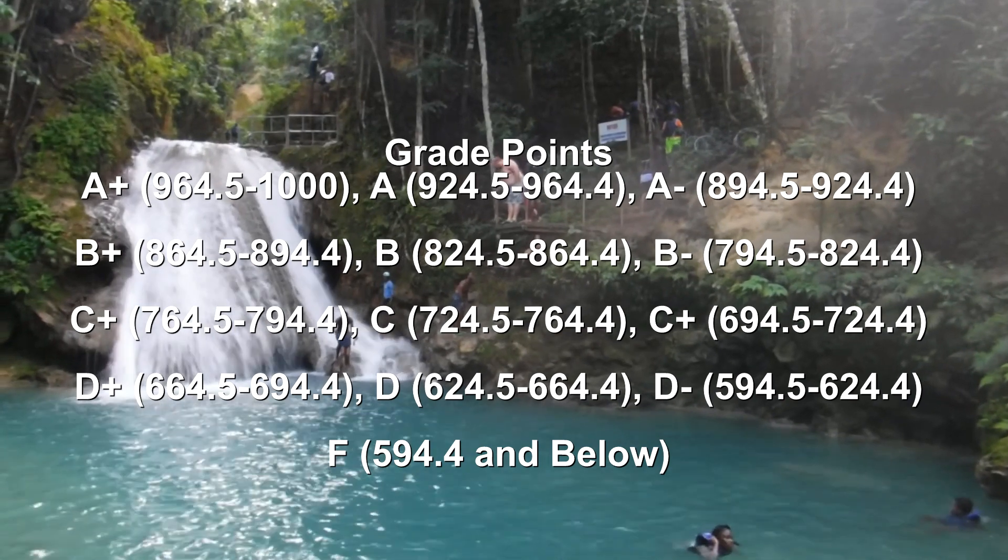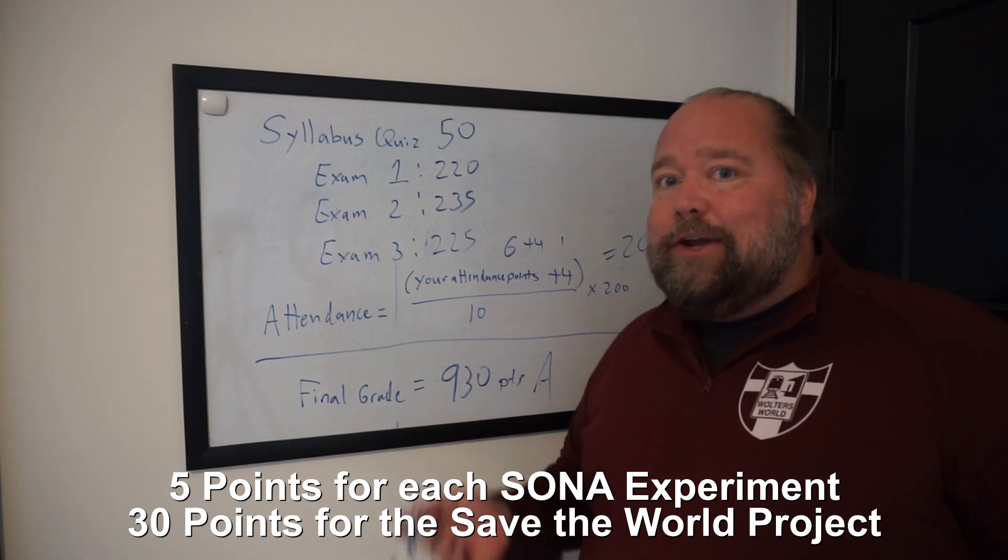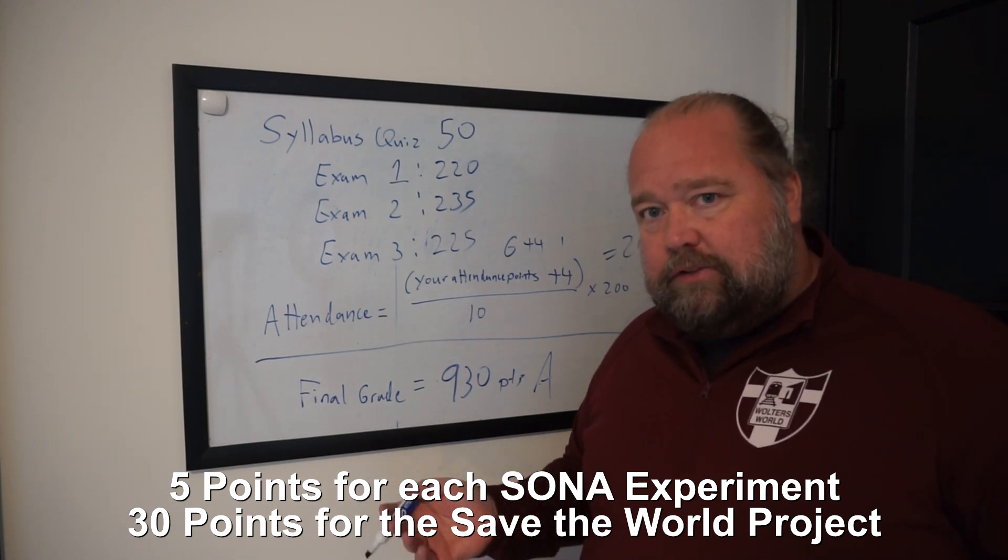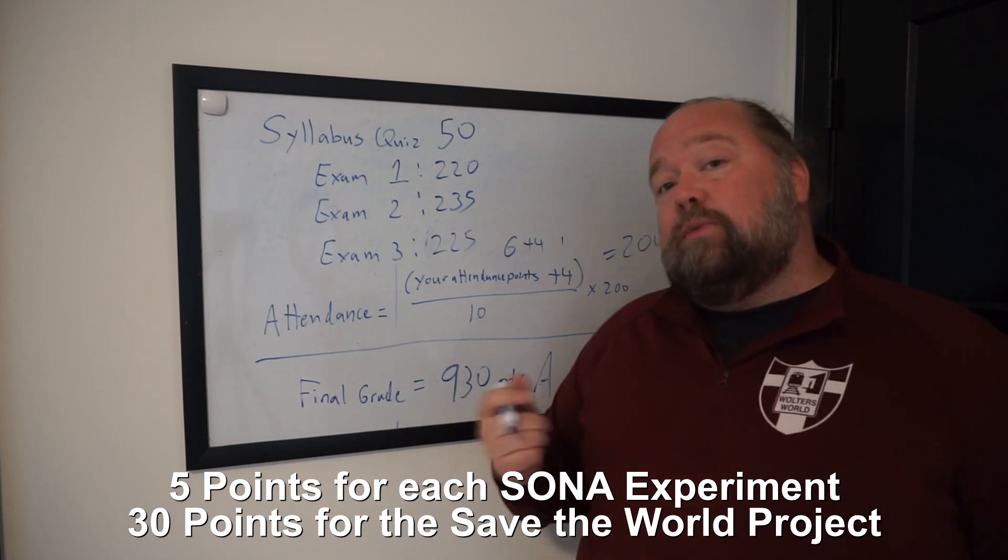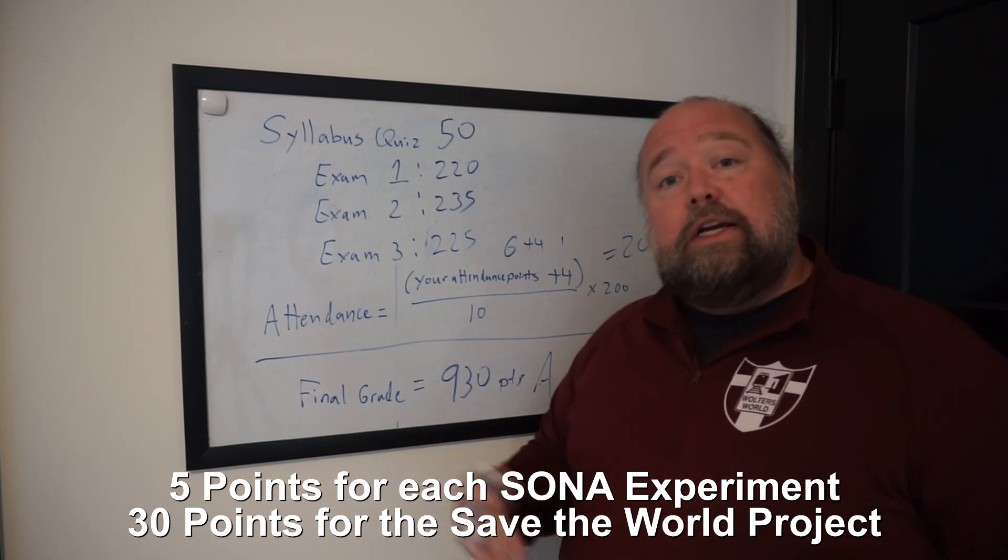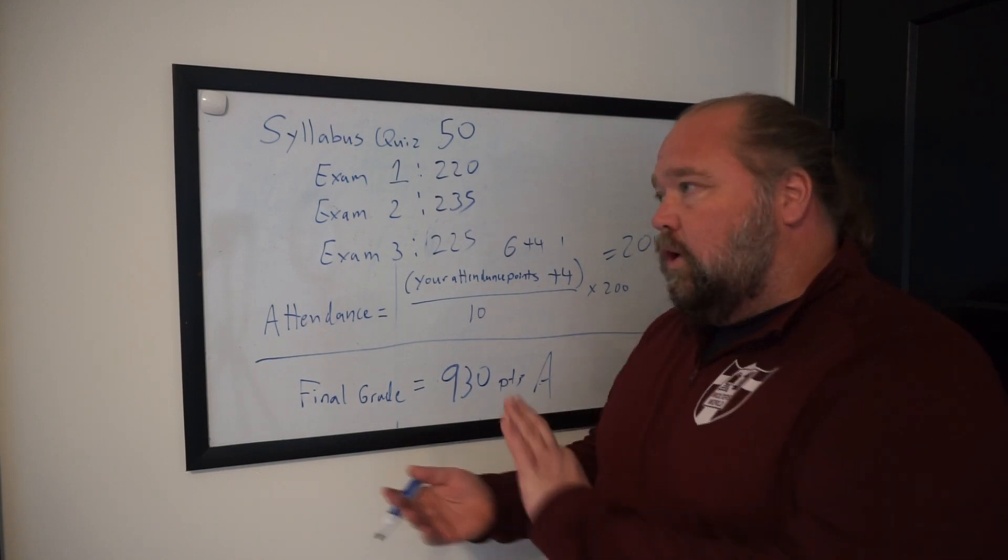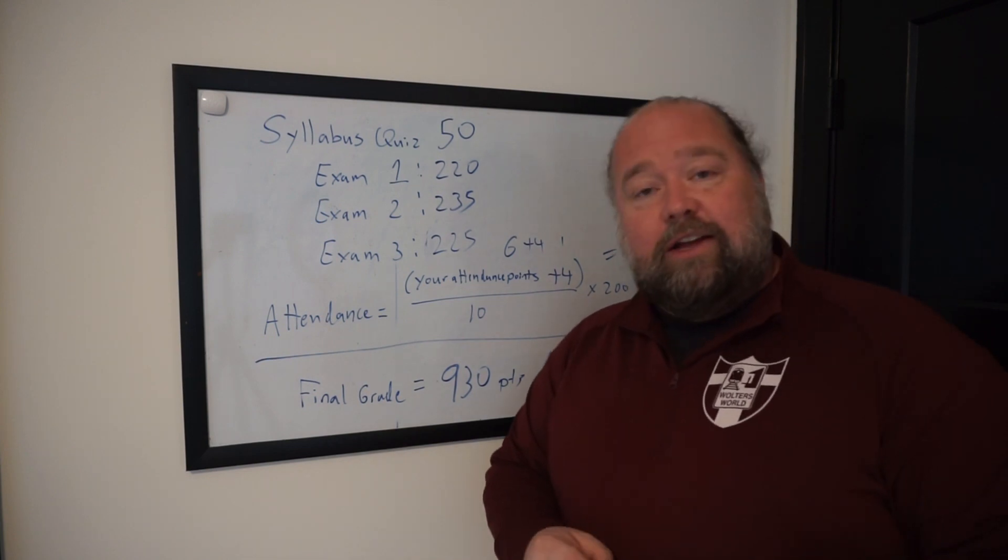Now, if you did do SONA experiments, each SONA experiment will add 5 points onto here. I did not get those until finals are going through, so I can't tell you where you are now. If you did the Save the World project, that gives you 30 points, so you'd add 30 points onto here to give you an idea. So hopefully this can help you figure out your grade and where you stand, so you can decide if you need to do the final or not.